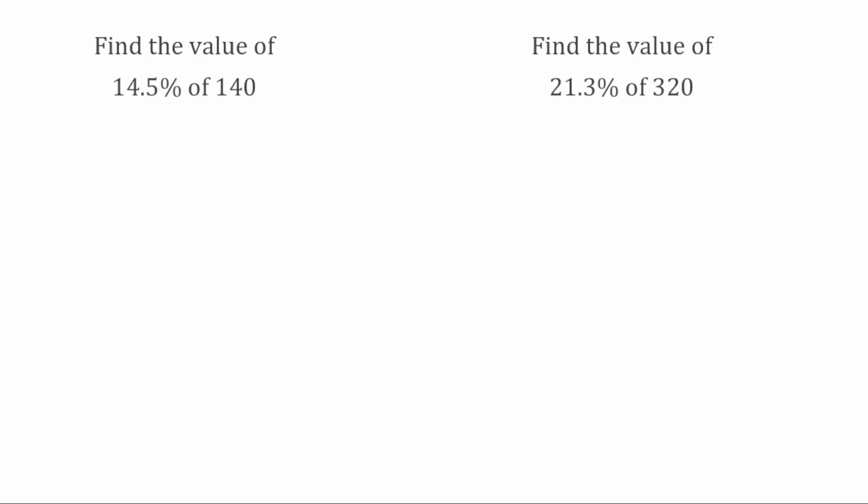We're going to do something very similar for these questions today. To find our decimal percentages, we're going to split our percentages up into tens, units, and tenths. For this first question, we've got to find the value of 14.5% of 140. To begin with, I'm just going to find what 10% would be, because to find 10% of any number, all I have to do is divide that number by 10. So we take our 140, divide it by 10, that gives us 14.